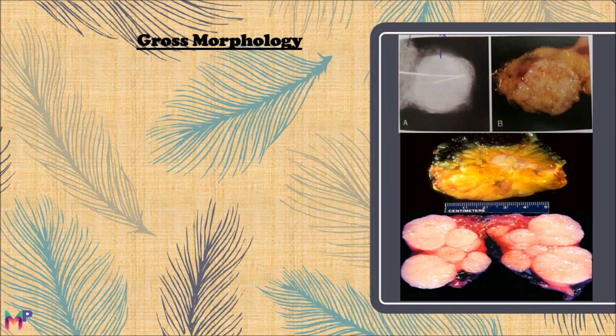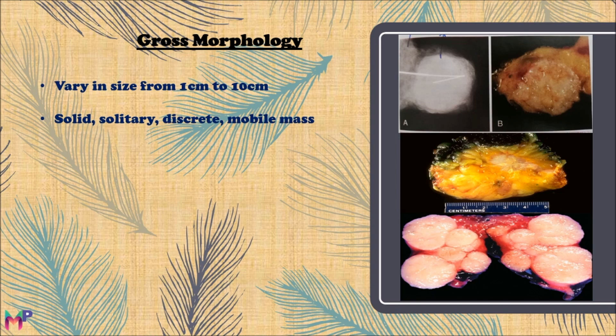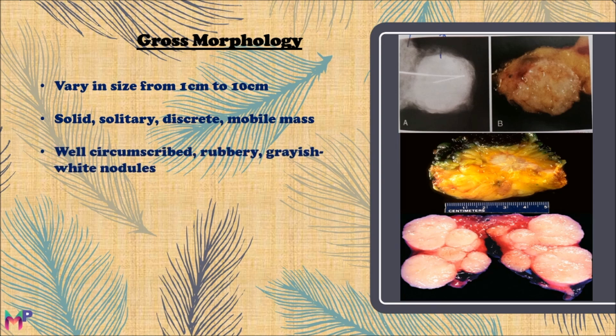Moving on to gross morphological features: fibroadenoma varies in size from 1 cm to 10 cm, potentially involving most of the breast. It appears as a solid, solitary, discrete, mobile mass. Solitary because it is an isolated structure; discrete because it appears as a separate entity; and mobile because you can easily pinch and move the lump. It appears as well-circumscribed, rubbery, grayish-white nodules with slit-like spaces. On cut section, it appears as a tan-white structure.